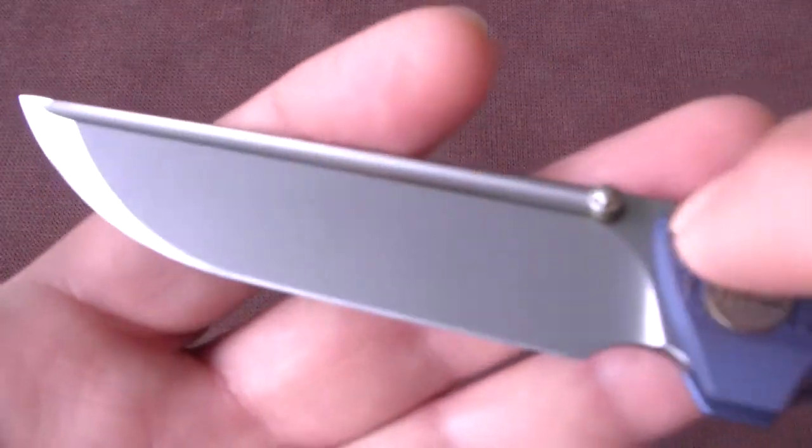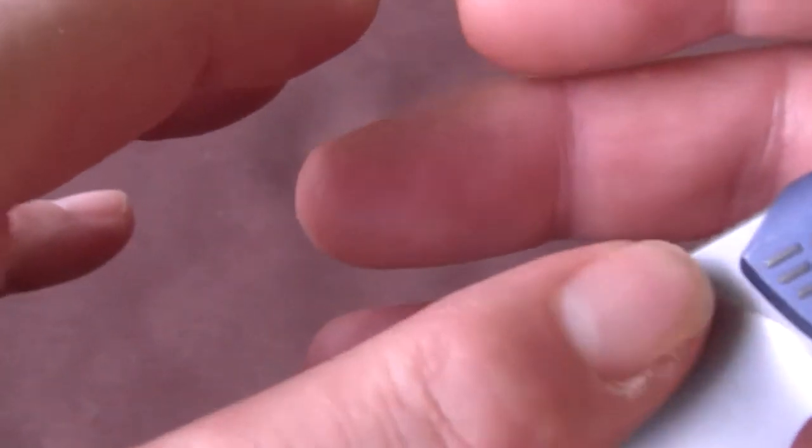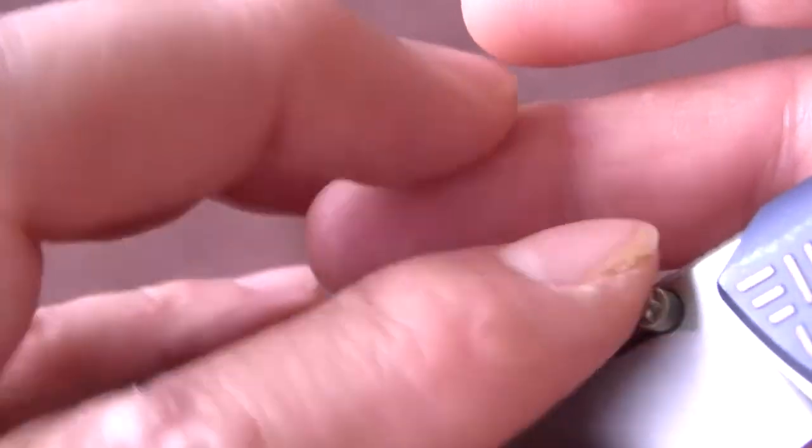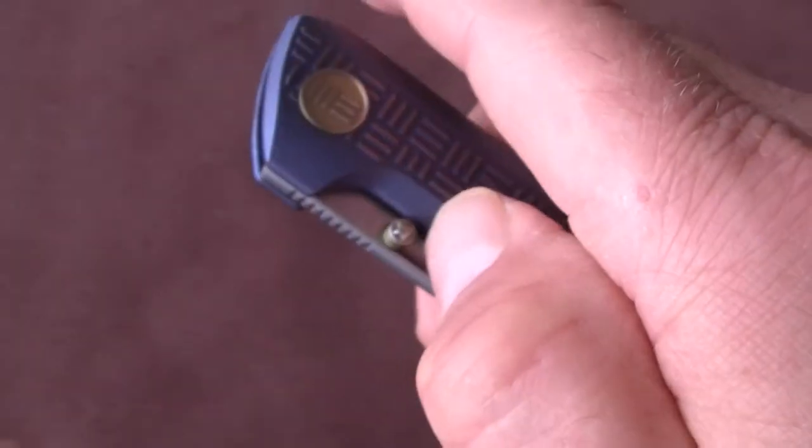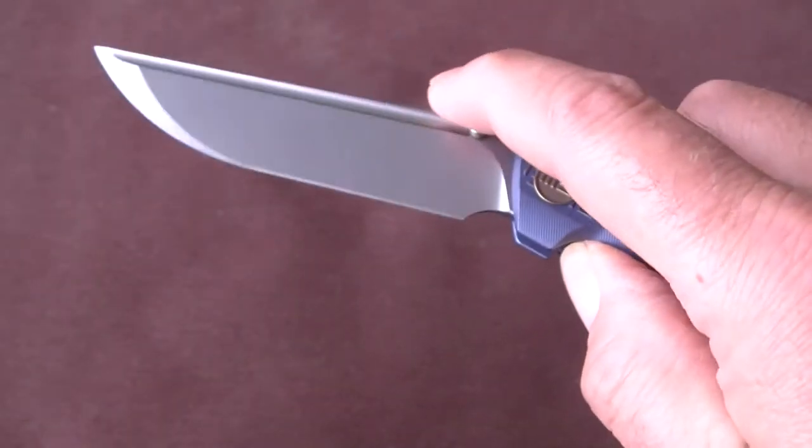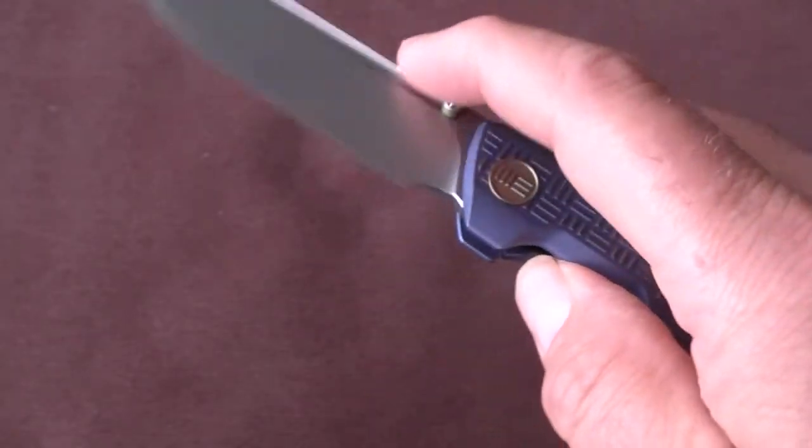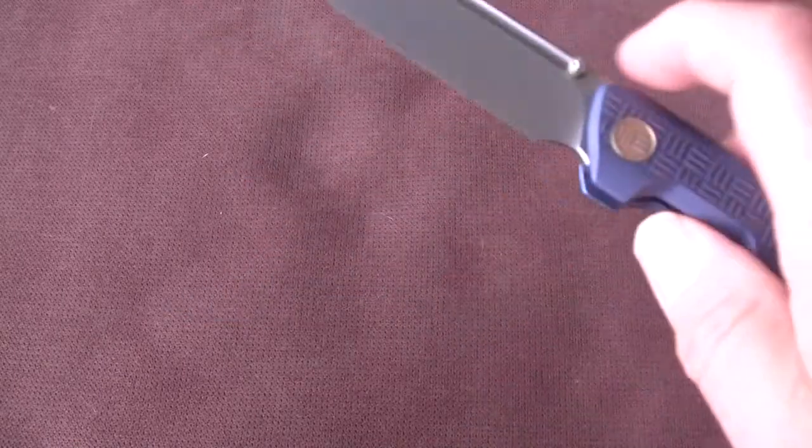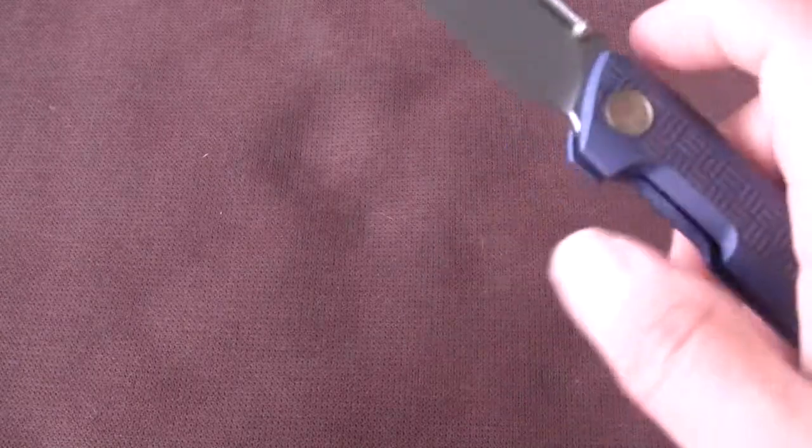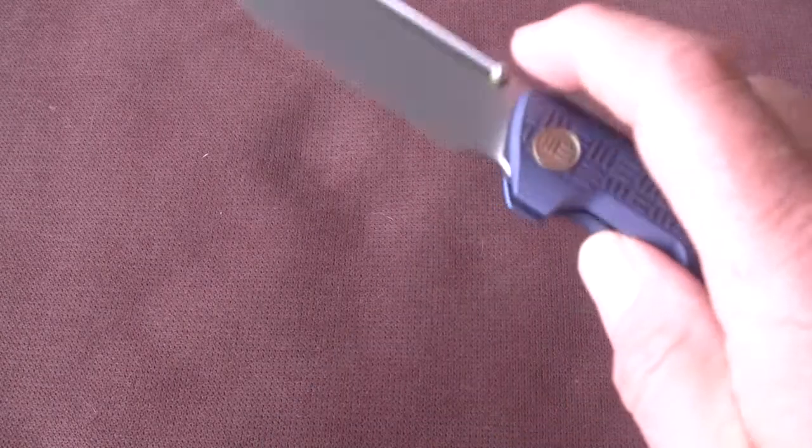Some people don't like these thumb studs because they feel a little bit pointy, although everything is rounded off. So I don't mind these thumb studs. Most of the times I put my nail against the thumb studs and no problem at all. But I also can use the skin of my thumb. Maybe some people have thin skin and it can be annoying, but I don't care, I don't mind.